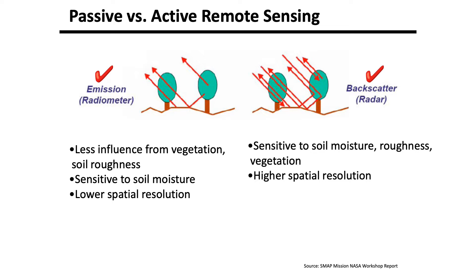On the other hand, the active component or backscatter radar has the ability of finer spatial resolution. It is also sensitive to soil moisture, however it's influenced more by vegetation and surface roughness. The goal here is to try to combine these two technologies optimally so you can leverage the capabilities of both.